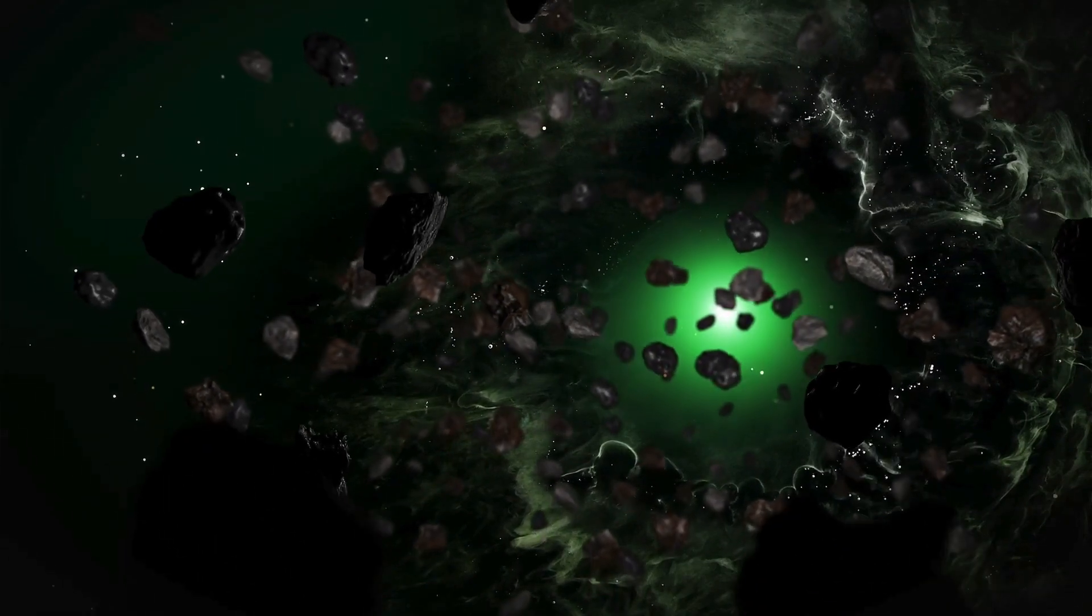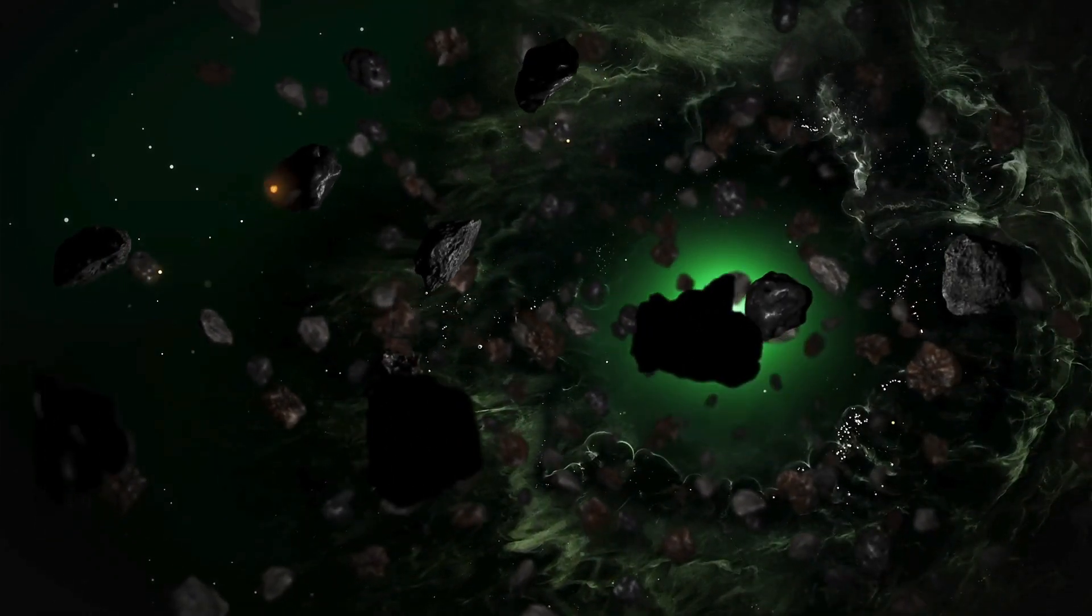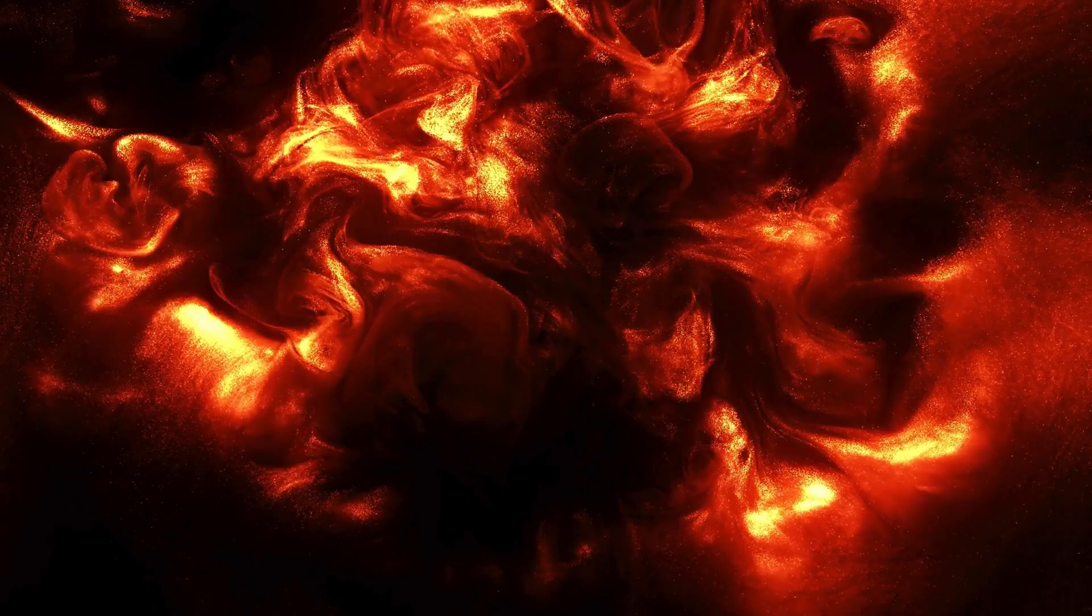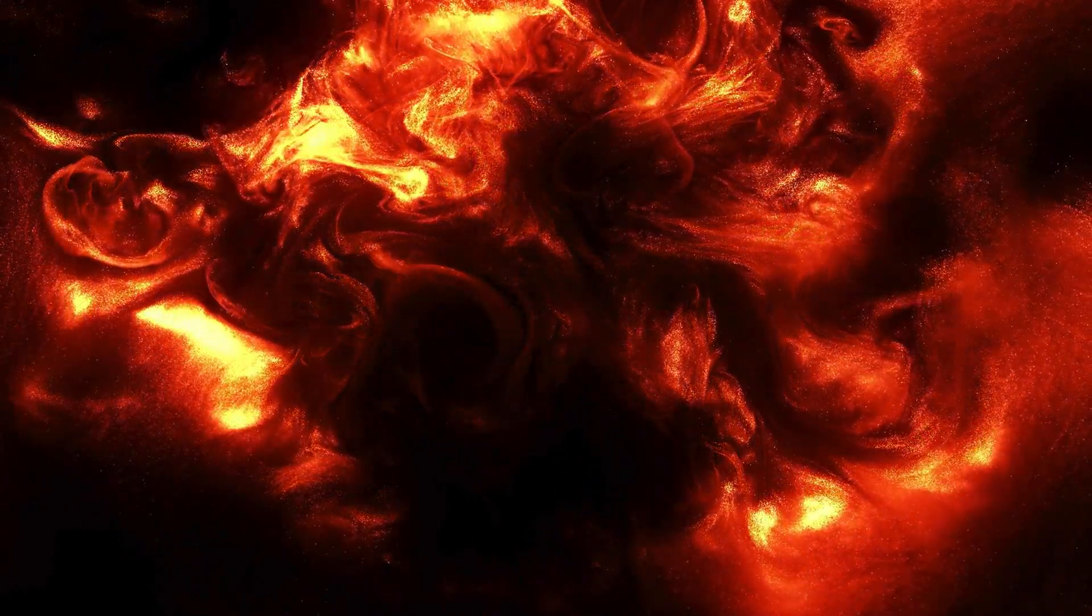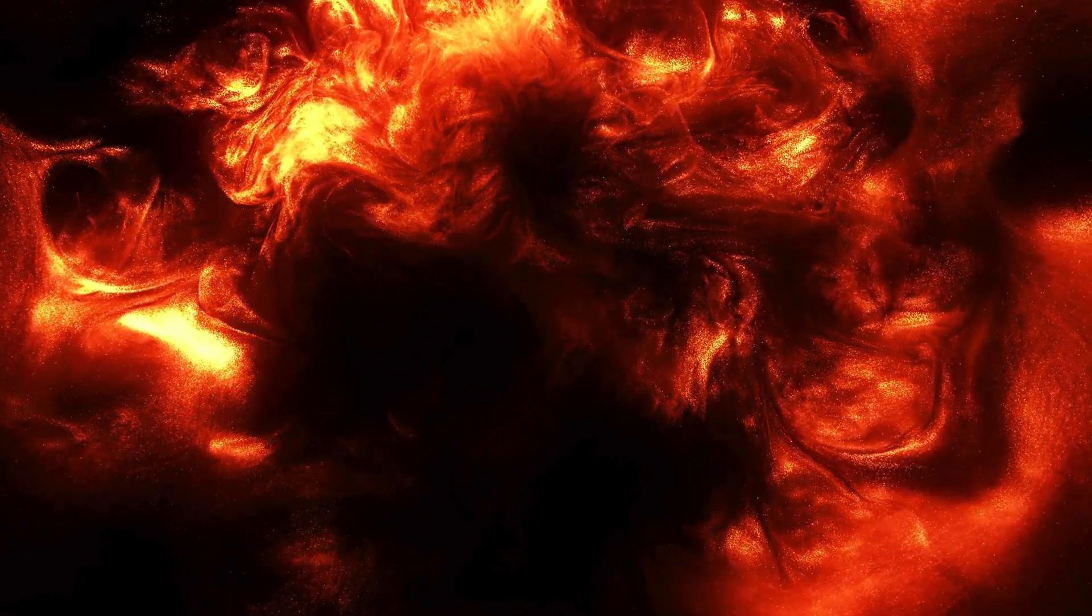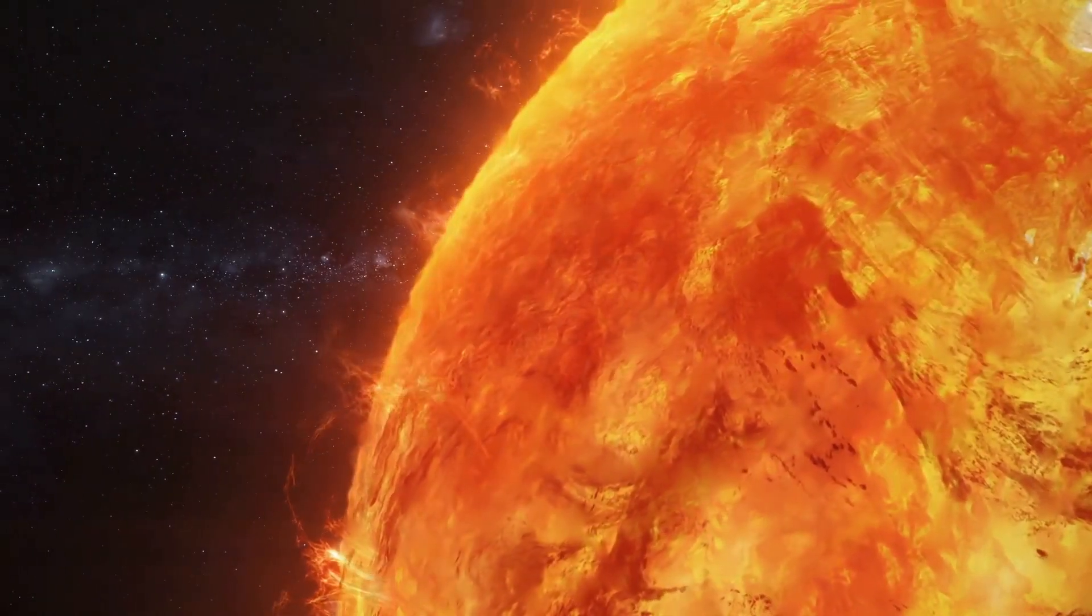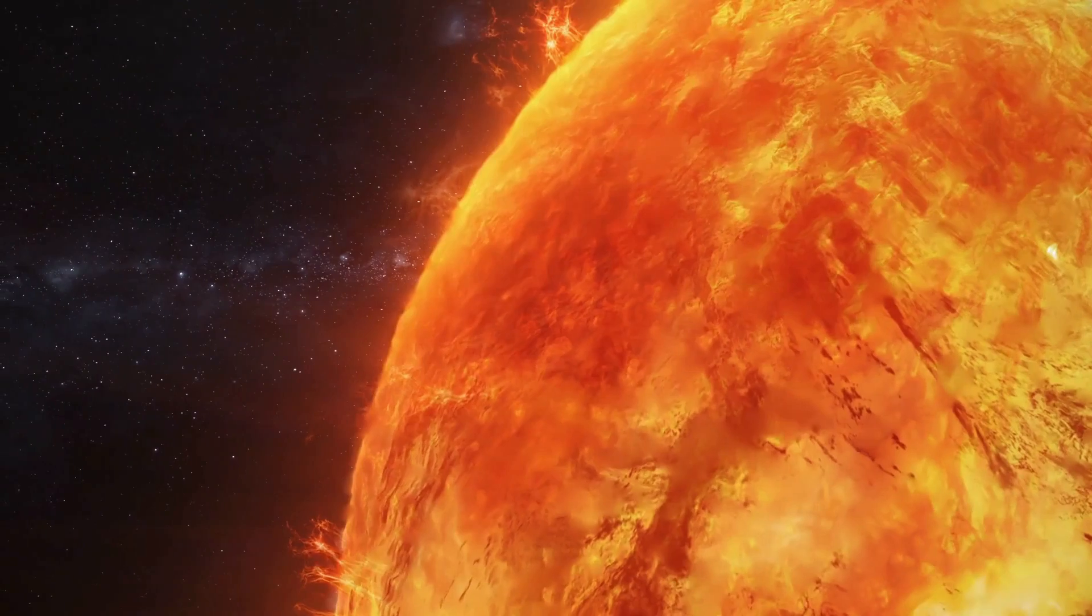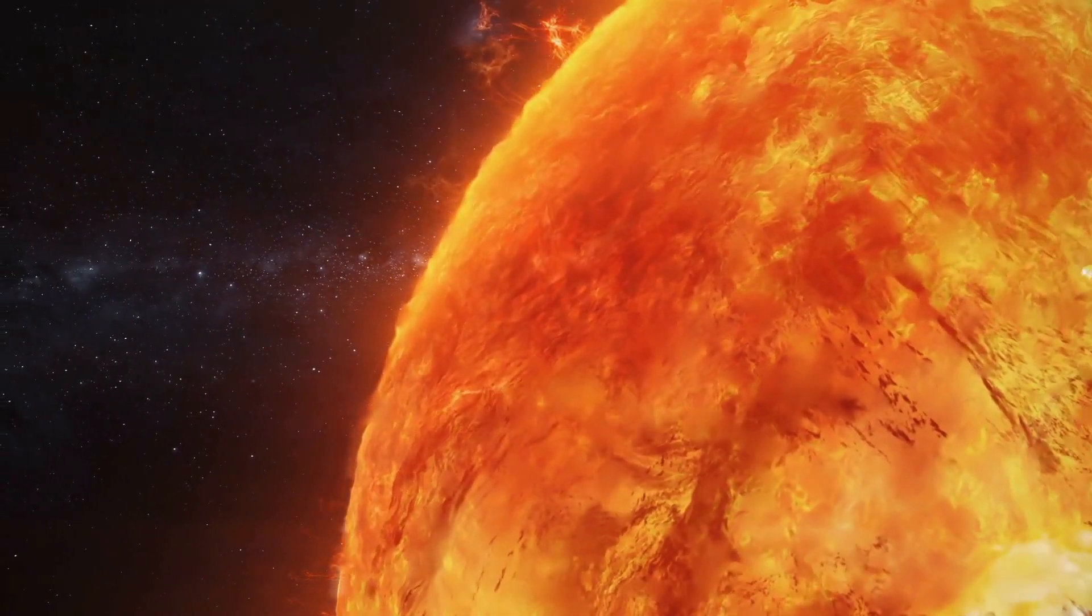The Sun is made primarily of hydrogen and helium as plasma, a state of matter where electrons are not bound to atoms, resulting in a combination of free electrons and ions. The Sun's interior is divided into several layers, with the core at the center surrounded by the radiative zone and the convective zone.